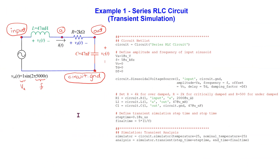Let us see how we can do transient simulation and phasor circuit analysis side by side in Python. The first example we study is a series RLC circuit as shown. The input signal is a 1 volt amplitude and 5 kilohertz frequency sine wave. For R equal to 2 kilo ohm, it can be shown that this series RLC circuit is critically damped.